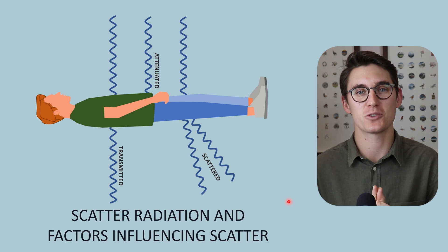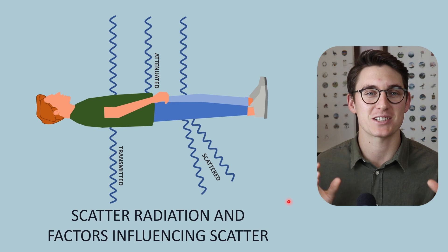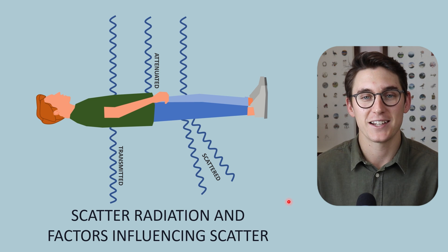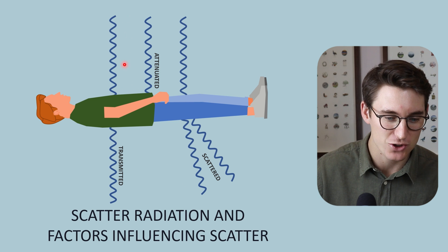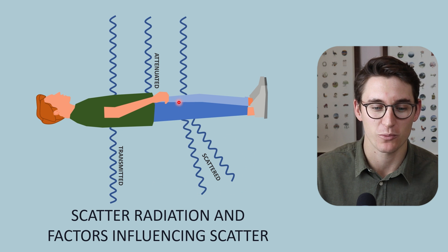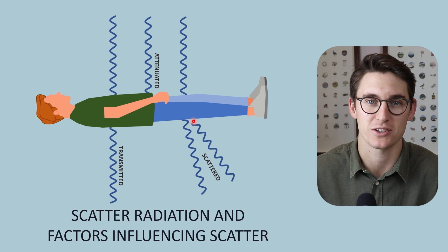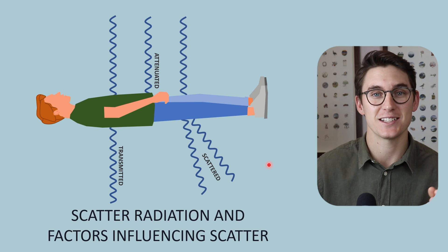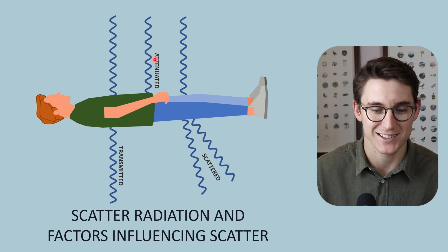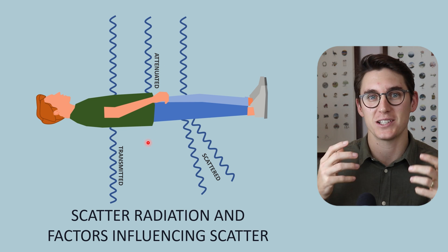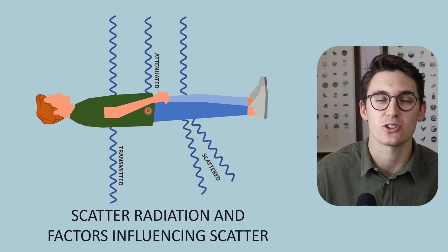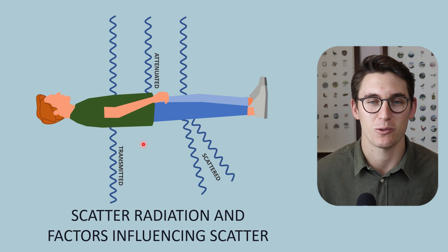Hello everybody and welcome back. Over the last couple of talks we've been looking at the various different types of x-ray detectors and how they take x-ray energy and convert them into a radiograph. Those x-rays striking our detector are either transmitted unattenuated x-rays that have passed through our patient, or scattered x-rays from Compton or Rayleigh scatter, and it's these x-rays that contribute to signal intensity. Other x-rays are attenuated by the photoelectric effect, giving us anatomic detail, and the varying shades of gray reflect the linear attenuation coefficient of the various tissues within our patient.